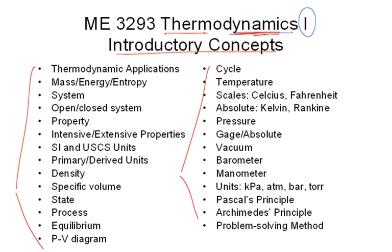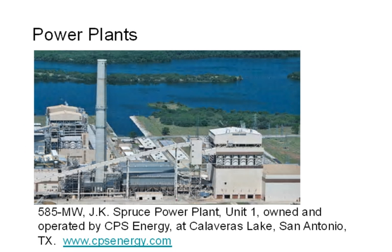Let's jump into some topics. Everybody here is a user of electricity — we're benefiting from lighting and air conditioning in this room. Where does that electricity come from? Thermodynamics is the study of energy, the forms of energy, and the transformation of energy between forms. One of the end uses we like to think of is electricity for lighting, compressors, chillers, refrigeration, and air conditioning systems.